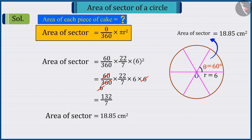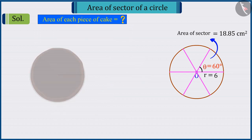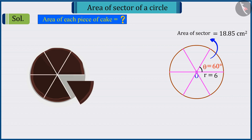And we are dividing the cake into 6 sectors. So, we can say that the area of each piece of cake will be 18.85 square centimetres. Let's look at another example.